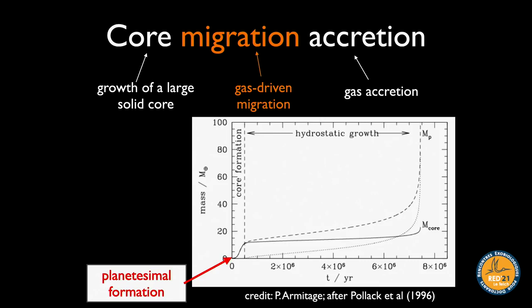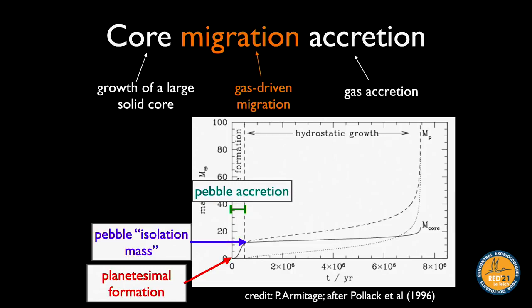Here is a diagram showing a simple calculation of the standard core accretion model. Early on, planetesimals must form. Then quickly, probably by pebble accretion, the largest planetesimals grow into giant planet cores of several Earth masses. Growth then shuts off when the planet reaches pebble isolation: a pressure bump exterior to the growing core's orbit traps pebbles and stops them from accreting onto the core.